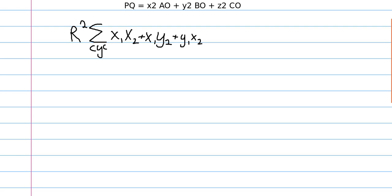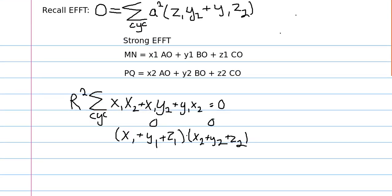The proof offered in the document shows that this factorization, or this cyclic sum, is actually equal to x1 plus y1 plus z1, times x2 plus y2 plus z2. And so, since these were both zero, we got that this cyclic sum was zero. But, if we have these two sums multiplied together, only one of them has to be zero. And so, that's what strong EFFT uses.